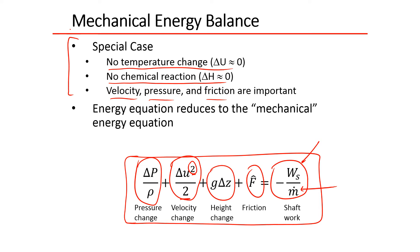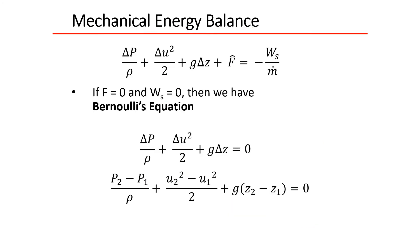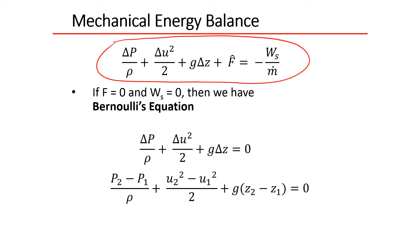So this is the mechanical energy balance considering velocity, pressure, elevation, friction — those mechanical effects. Now if friction equals zero and shaft work equals zero, then it actually reduces down to Bernoulli's equation.